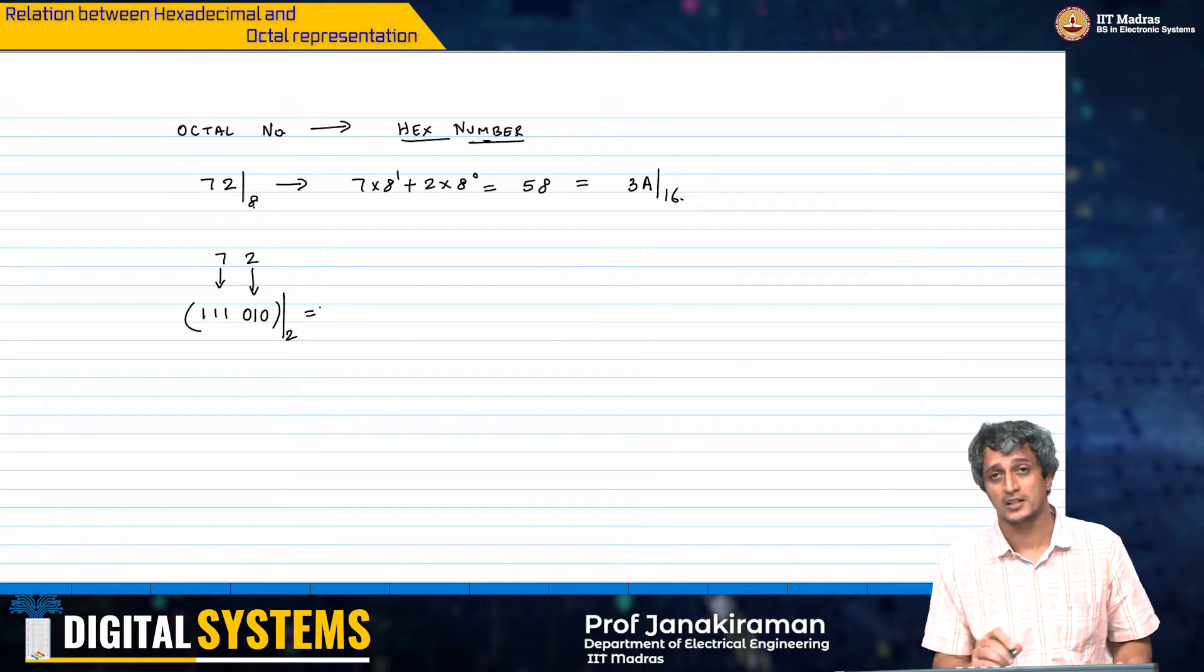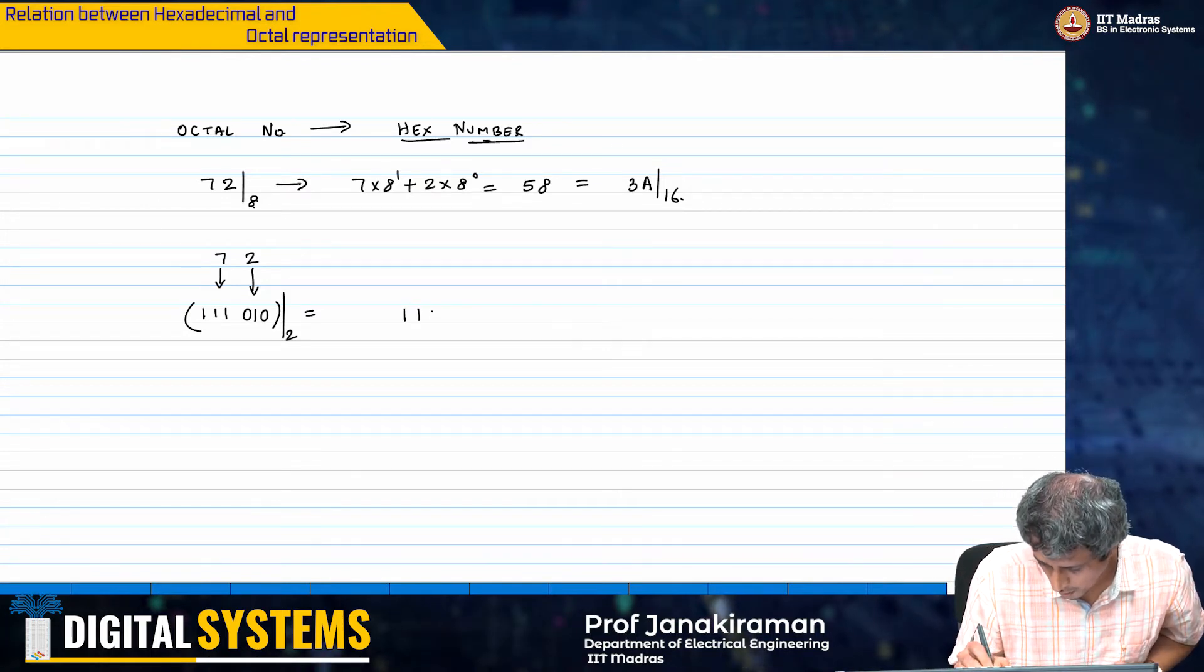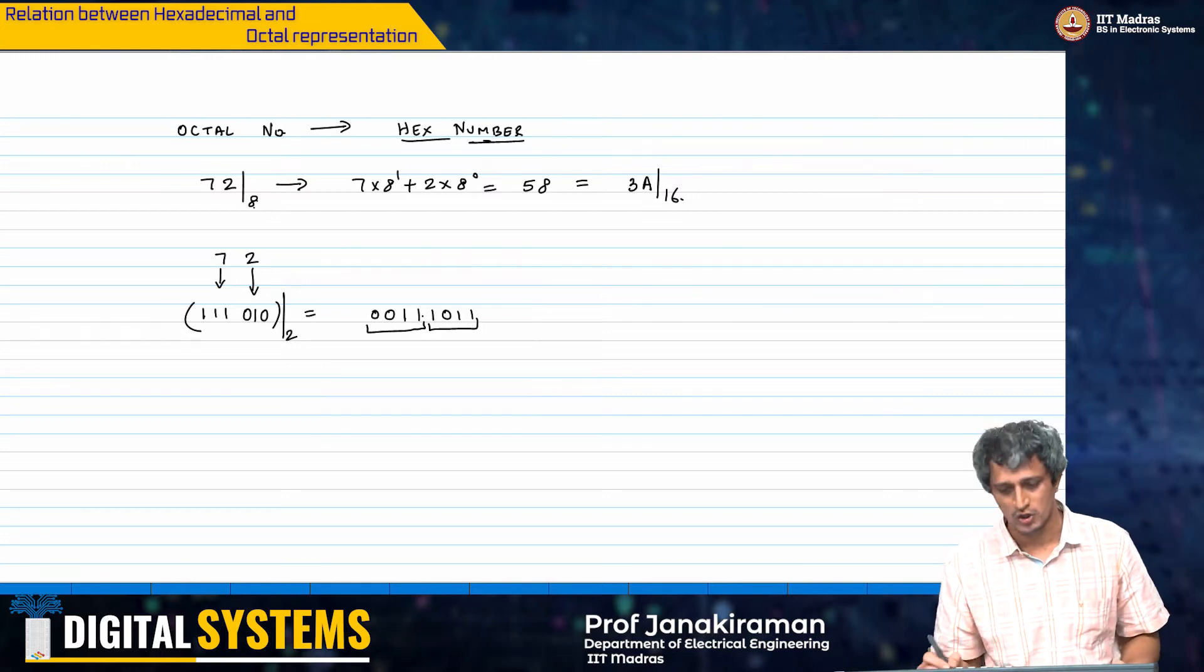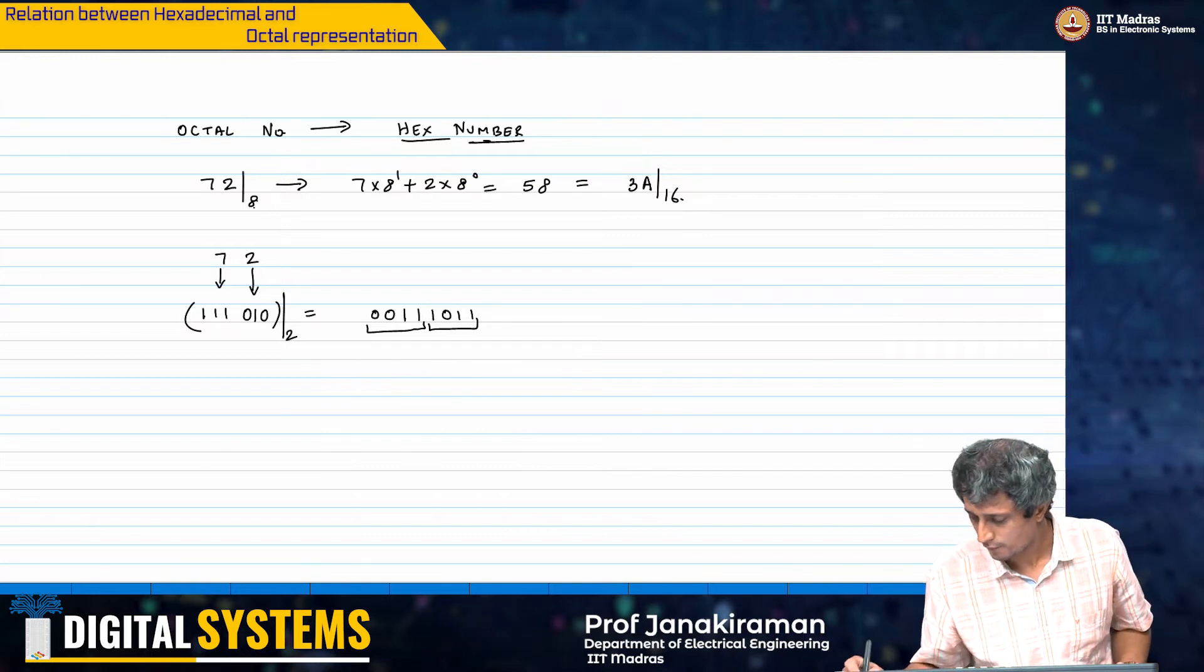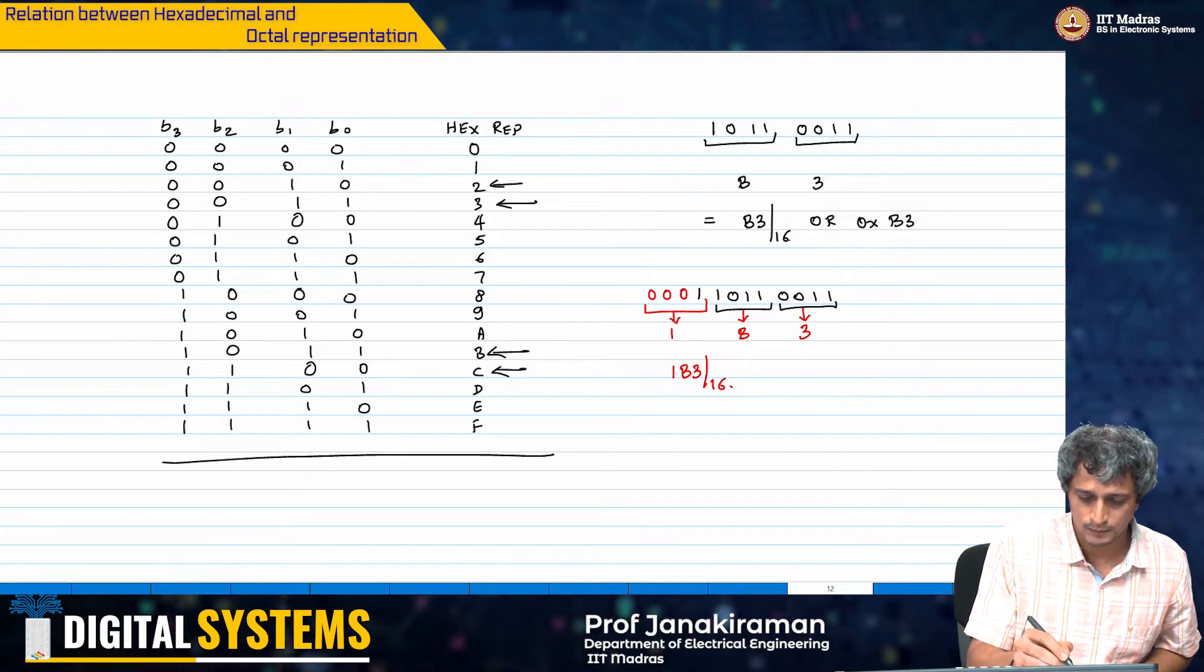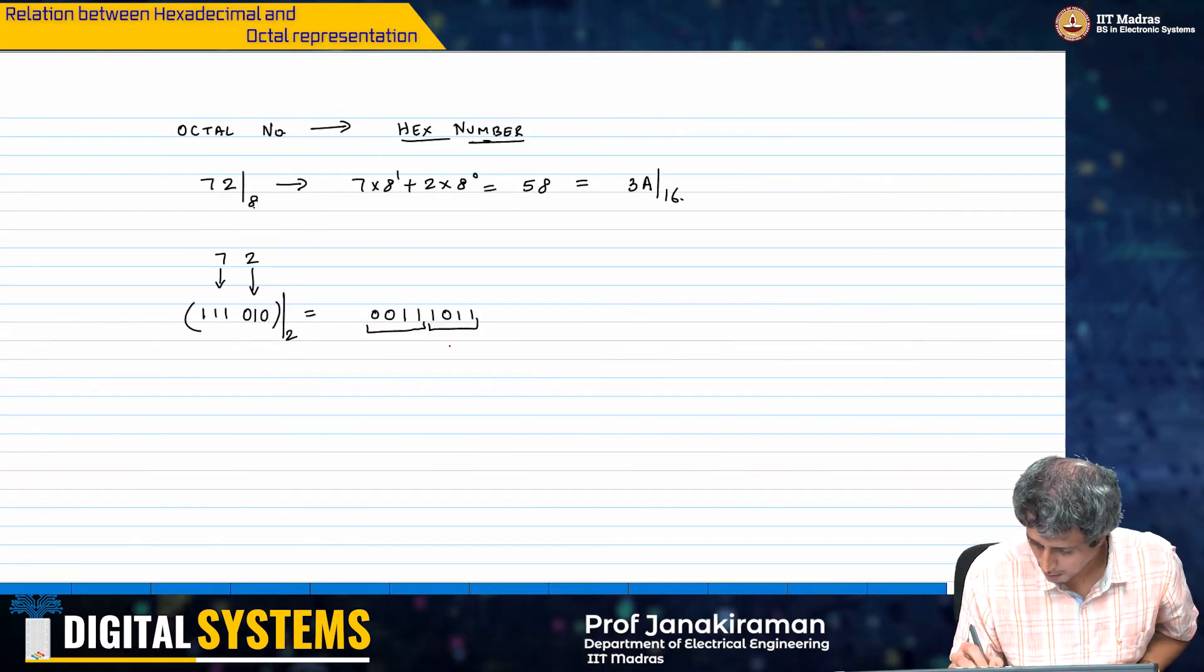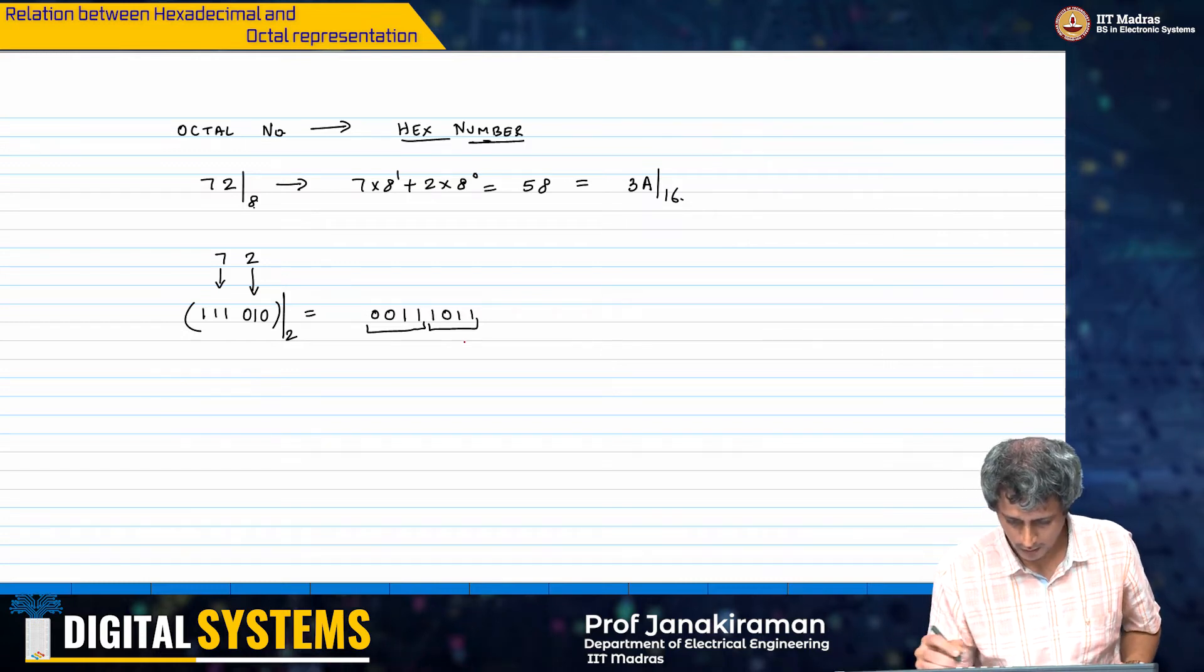Now if I want to convert this to a hexadecimal number, what do I do? I write out groups of 4. I append 2 zeros so that I get 8 bits. And then 1011. If you go back to this table here, 1011 is here.